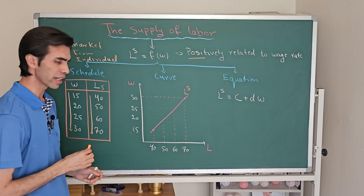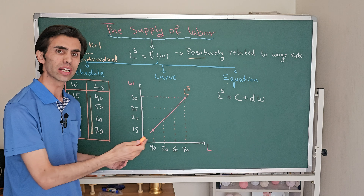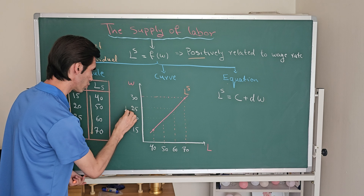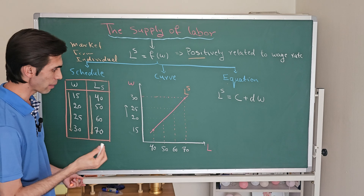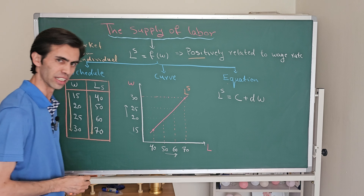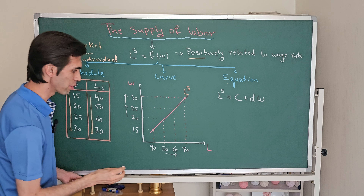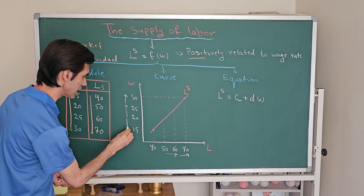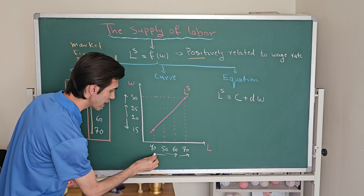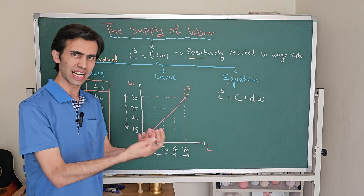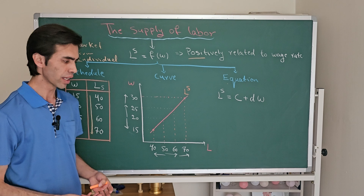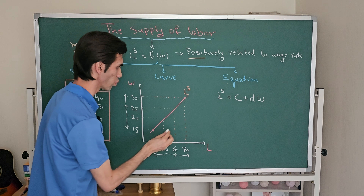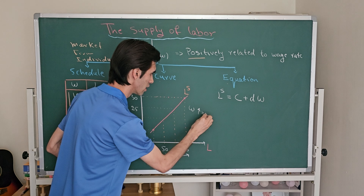The labor supply curve shows that when the wage rate increases, we will decide to supply more labor in the labor market. For example, if the initial wage is $20 and the wage rate increases from $20 to $25, our labor supply will increase from 50 to 60. Or when the wage level increases to $30, our labor supply will increase to 70. Also, when the wage level decreases from $20 to $15, we will supply less labor. This curve is upward sloping because when the wage rate increases, the labor supply increases.